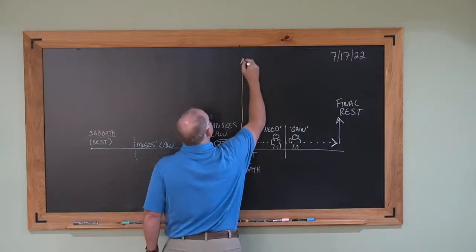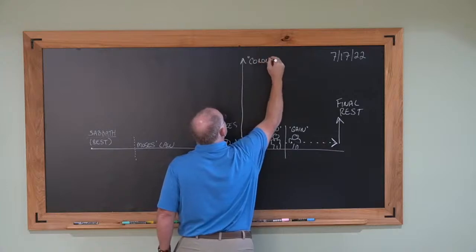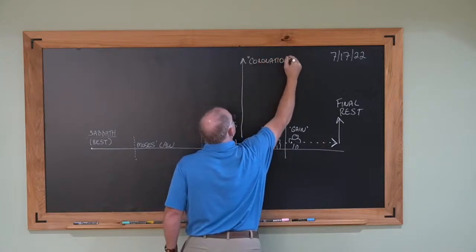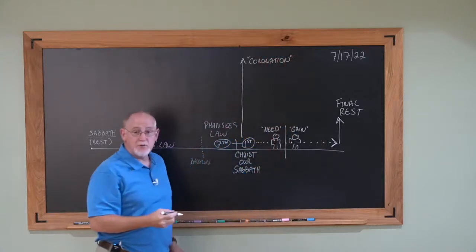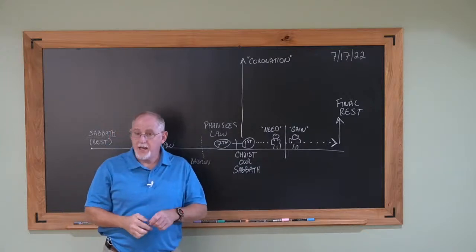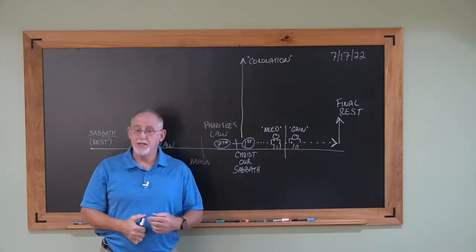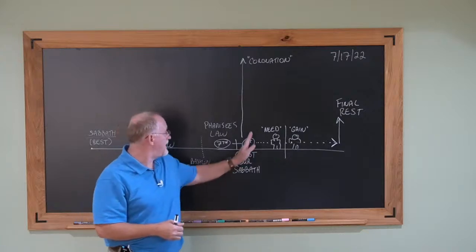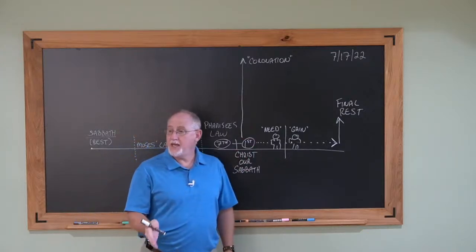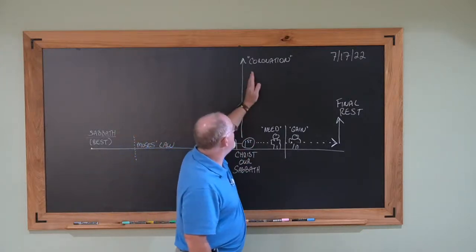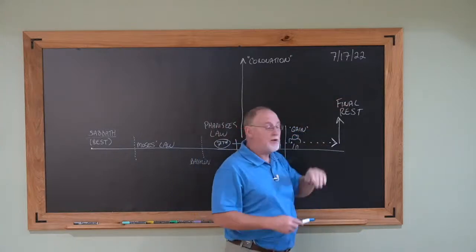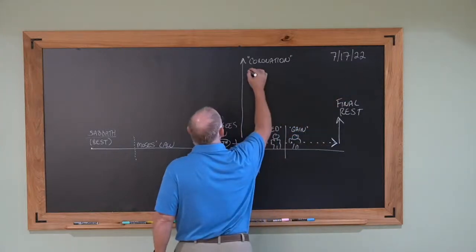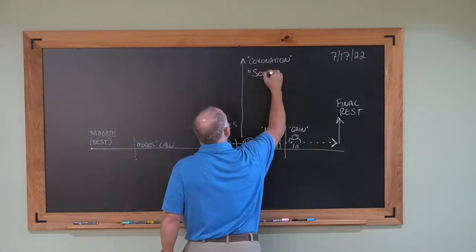When he ascended up, he went up to his coronation. And in his coronation, he received power. That's why he said, all power has been given me. It's why Paul said he was King of Kings and Lord of Lords. And so he rules, doesn't he? And yet, what's the title that he used for that? Son of Man.